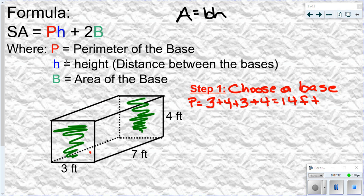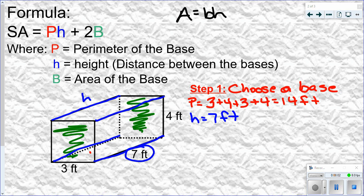H is the height of the prism — how far apart the bases are from each other, the distance between them. That's this measurement right here, and it's the same for all those connecting edges. The height is given right on the picture, so I just read it off — that's 7. Big B stands for the area of the base. This base is a rectangle, so we do base times height: small b times H. This side is 3, this side is 4, so 3 times 4 gives us 12 square feet.